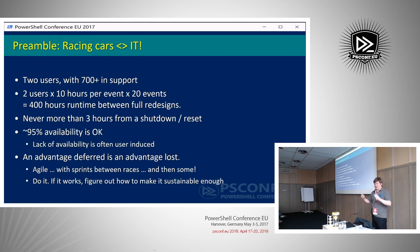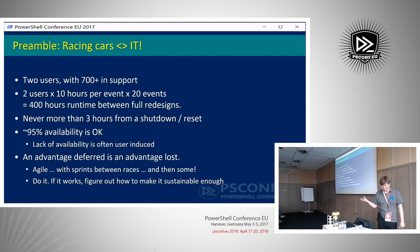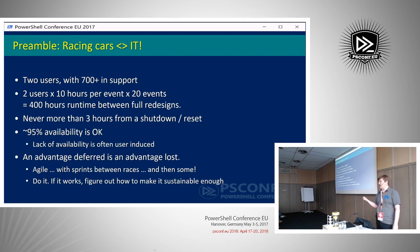We only use the cars about eight and a half to ten hours a race, 20 races a year — so we don't actually use the system for more than 400 hours before we throw it away and redesign it. You're also never more than a couple of hours from rebooting it. And 95% availability is okay — if you lose a car for one race, that's kind of accepted. Usually you can blame it on user error.